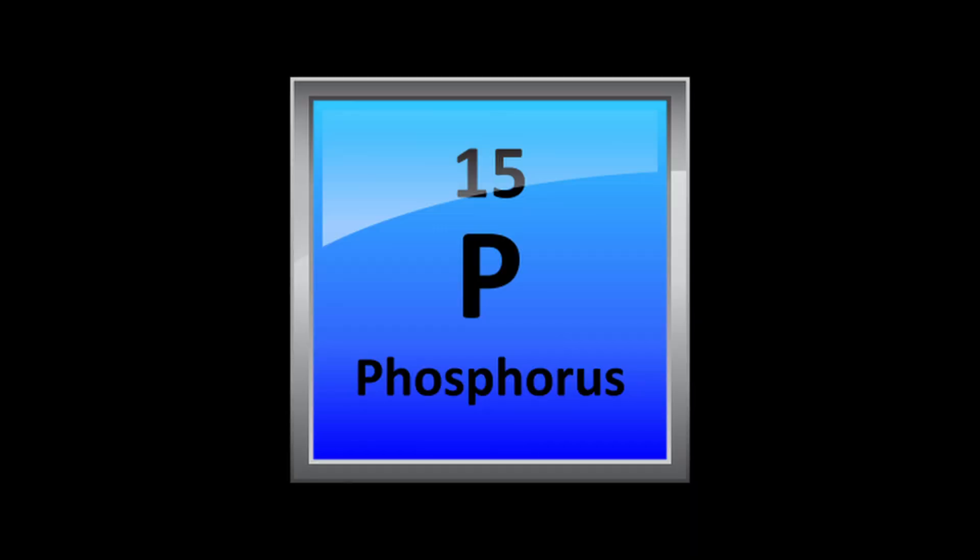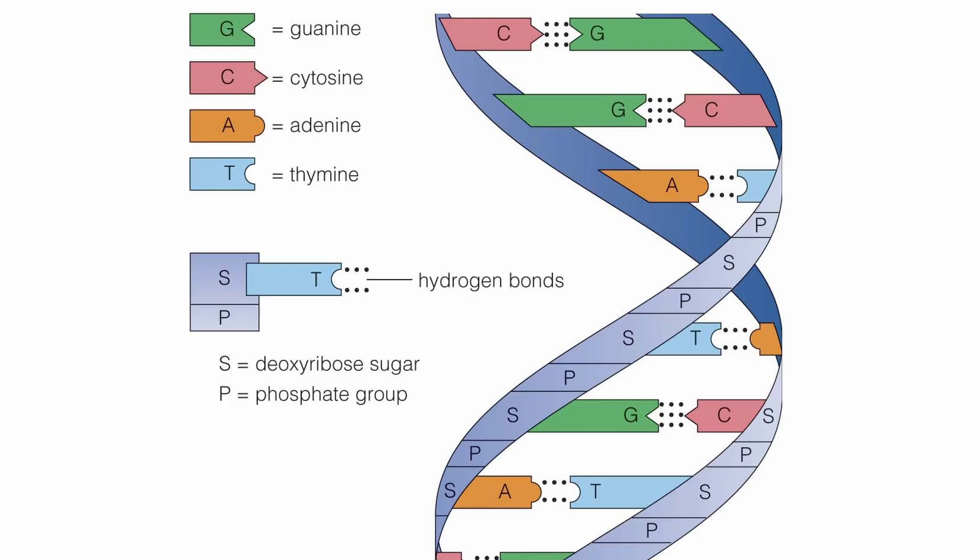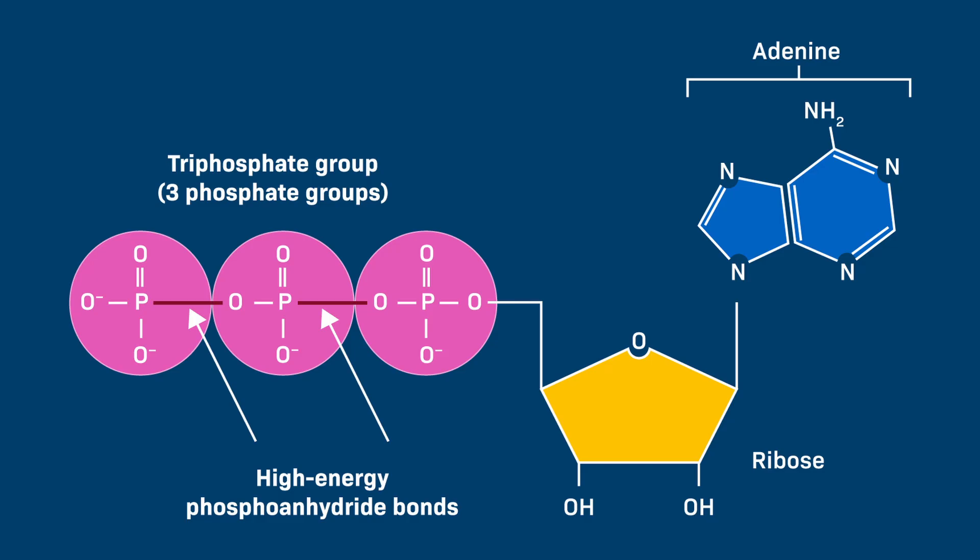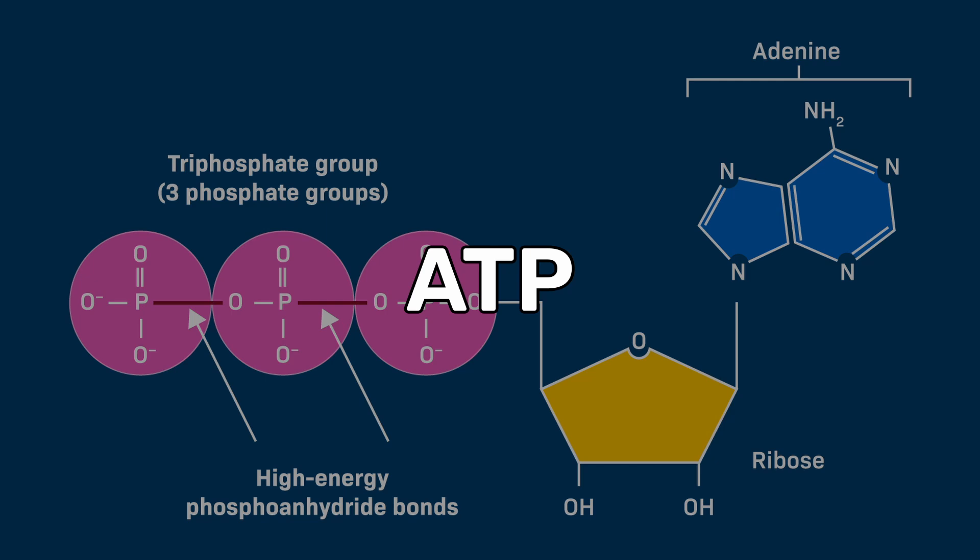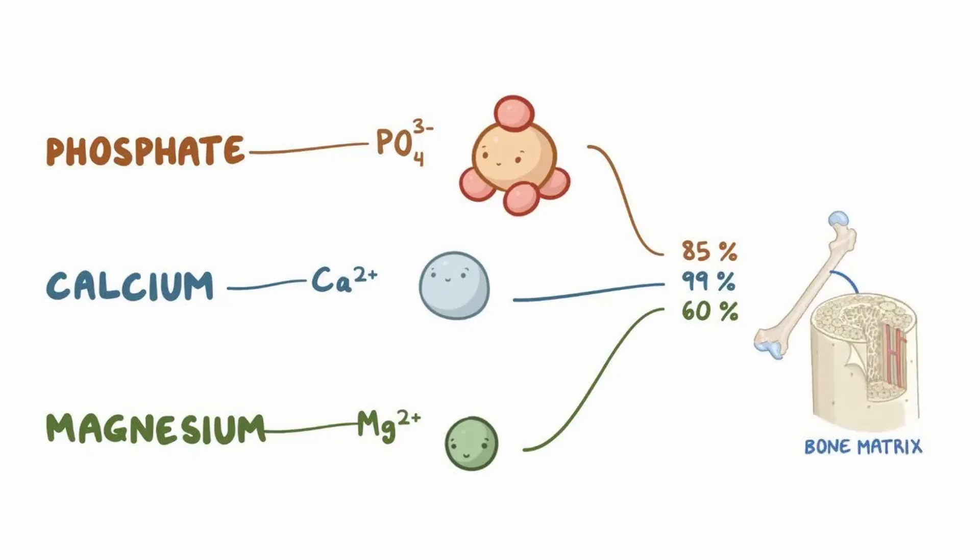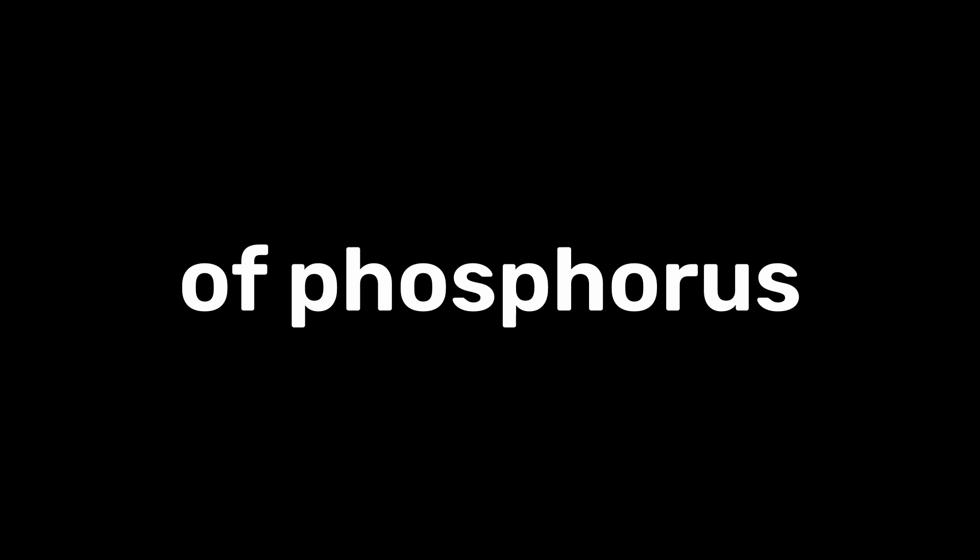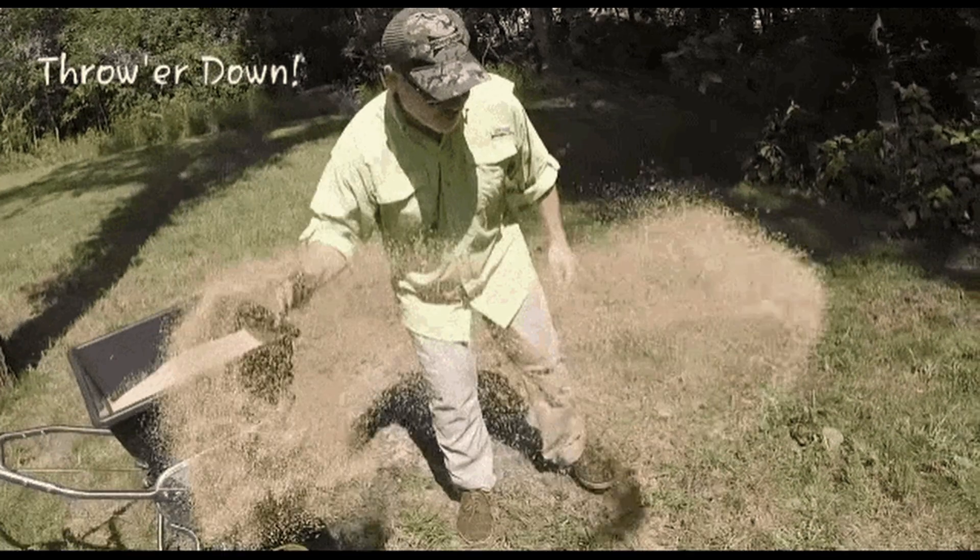Phosphorus is also essential for all living things, forming the sugar phosphate backbone of DNA and RNA. It is also important for the energy transfer in cells as part of ATP and our teeth and bones are also mainly calcium phosphate. Furthermore, one of the largest uses of phosphorus is for fertilizers as ammonium phosphate.